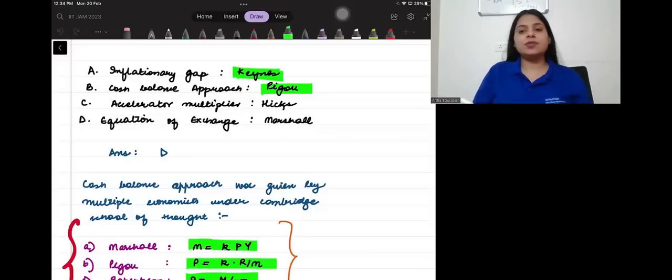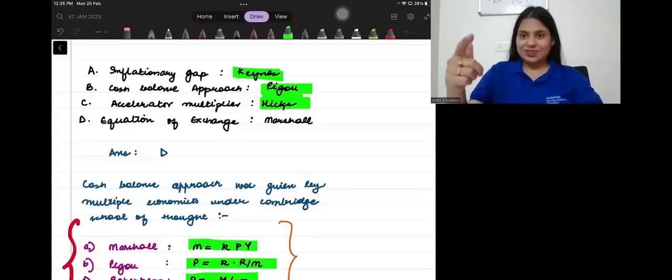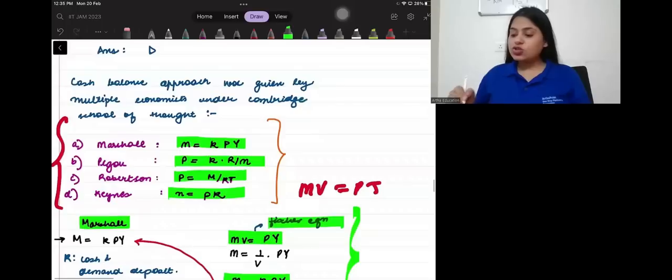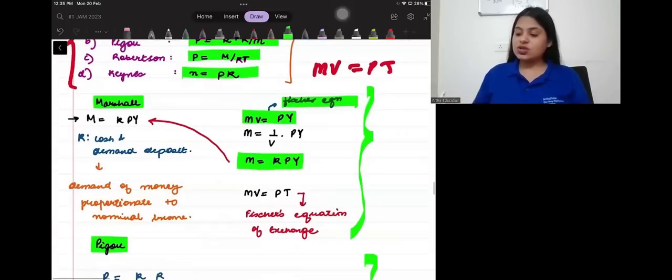This is a correct statement. The only statement which is incorrect is the equation of exchange. The equation of exchange was not given by Marshall. So, actually, I come back to my point B. The equation of exchange was actually this.